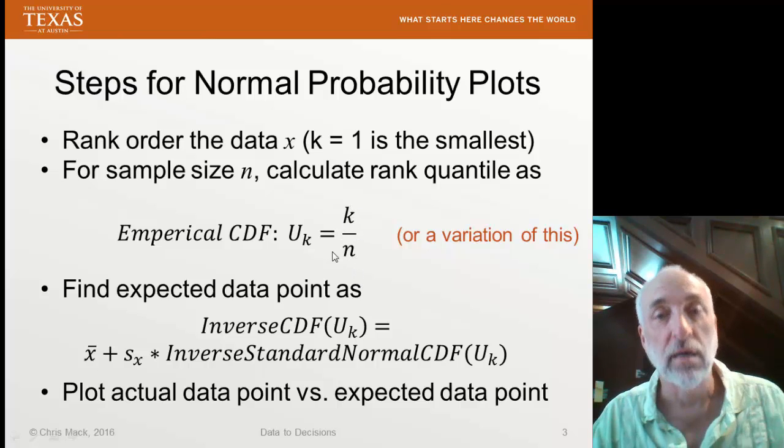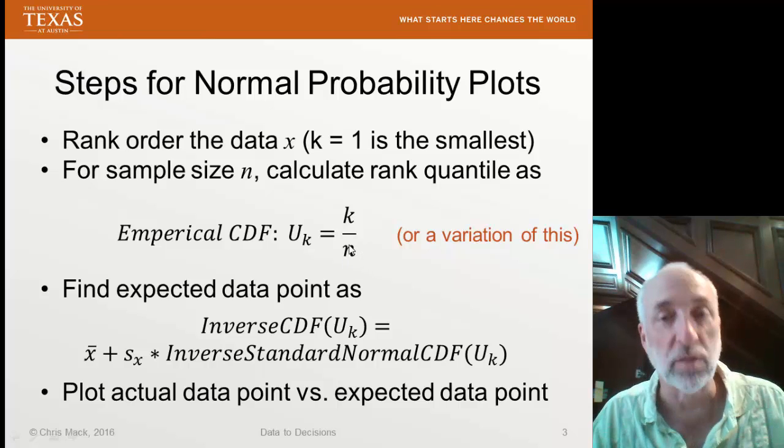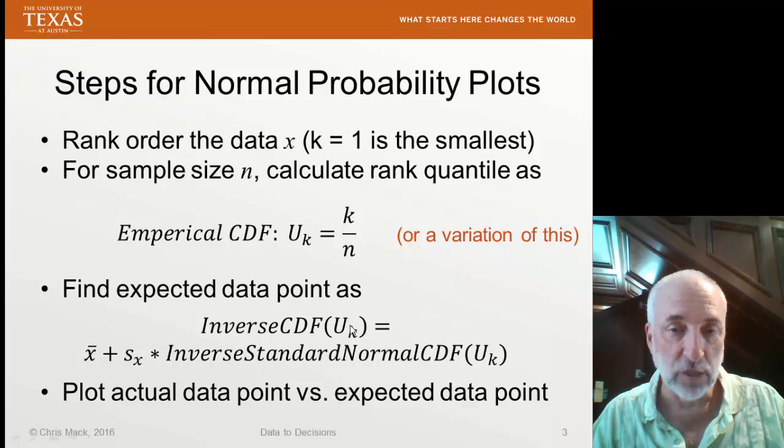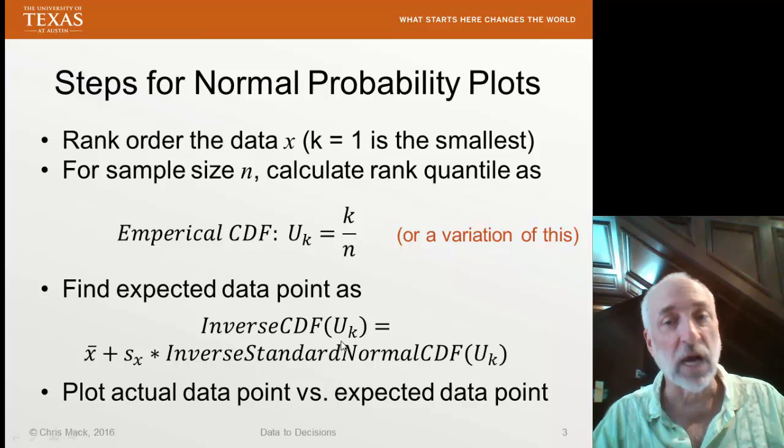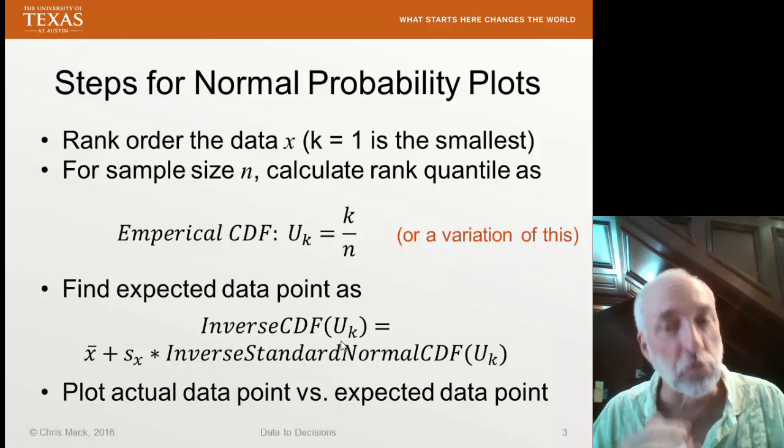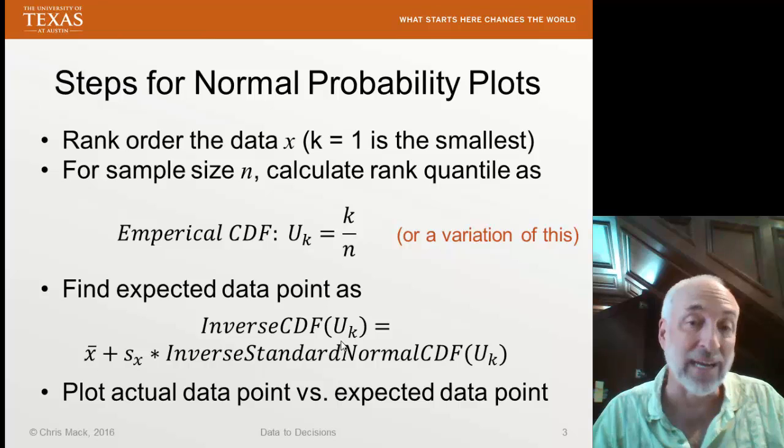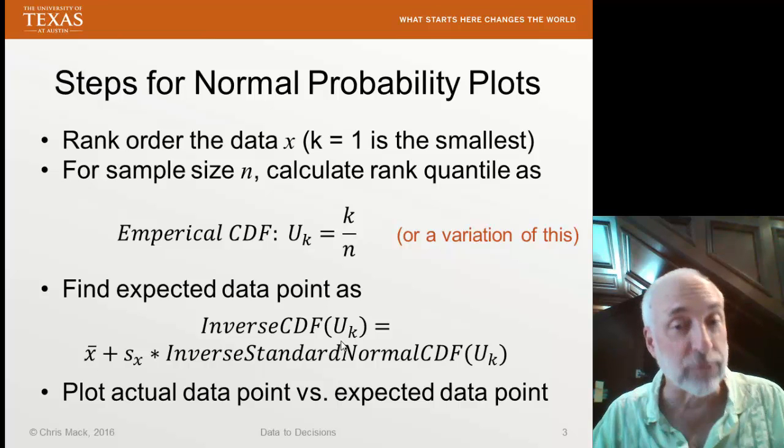And n is the total number of data points I have. So I just plug in k over n, or I'll show you some variations of that in just a moment. And then I take the inverse CDF. Well, if I'm assuming a normal distribution for my data, then I'm going to take an inverse normal CDF.